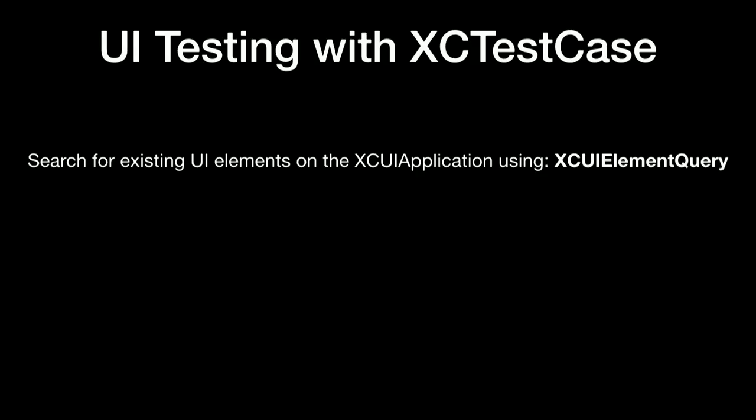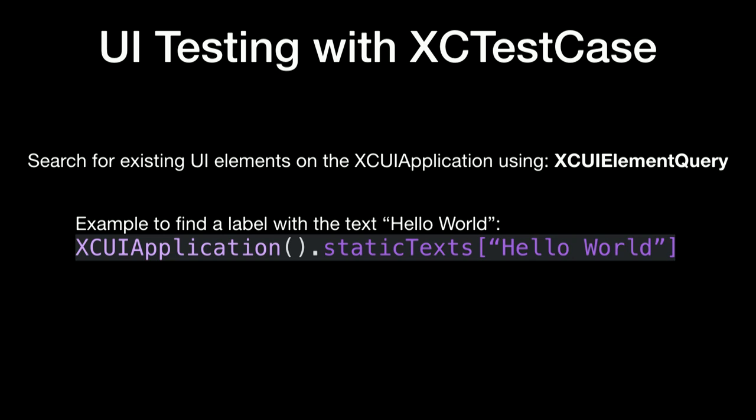Before we get into actual tests, a quick primer about UI testing with XCTest Case. A lot of us use XCTestCase for unit tests, focused on business logic. But when UI testing, you're using XCUIElement queries to find elements on the display and then check booleans against those elements. For example, to find a label with the text 'hello world', you use the current application and search through all static text on that screen. Static text means label. You can do this for all element types: text fields, tables, buttons, etc.